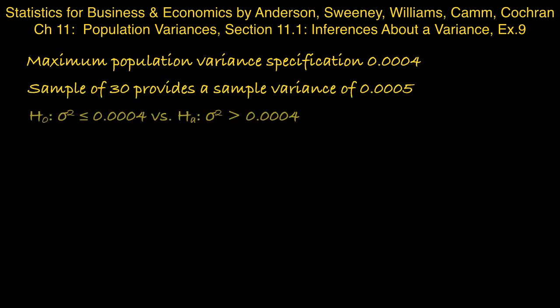So we want to do an upper tail test here, where the null hypothesis is that sigma squared is less than or equal to 0.0004, which would be within tolerance. And the alternative hypothesis is that sigma squared is greater than 0.0004, which would mean that the population variance specification is being violated.